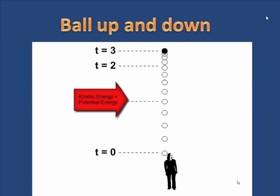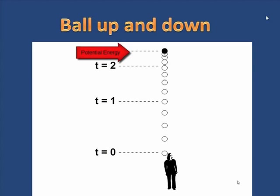But then, as it's moving up, there's a distribution of kinetic plus potential. The potential is increasing. The kinetic is decreasing. And at the top, it's all potential energy. It was converted into potential.